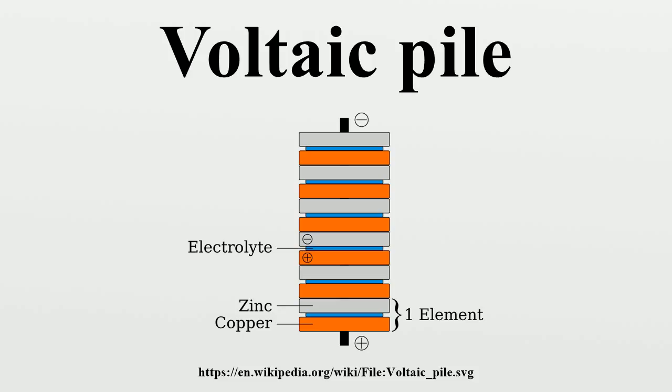While zinc is entering the electrolyte, two positively charged hydrogen ions from the electrolyte combine with two electrons at the copper electrode surface and form an uncharged hydrogen molecule. 2H+ + 2e- → H2. This reaction is called reduction.